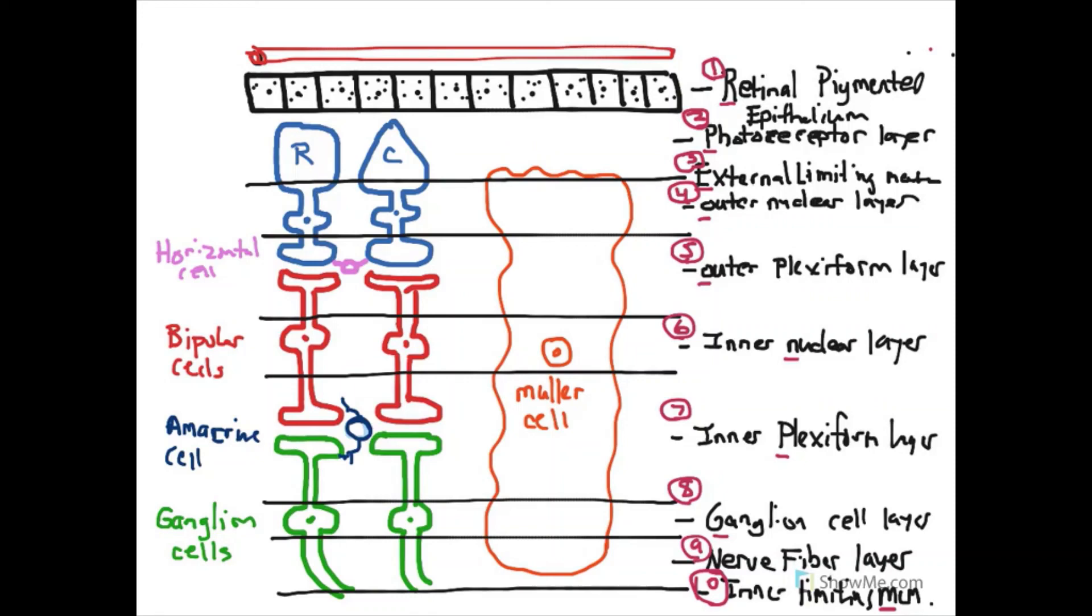So now rods and cones are sensitive to light. Please remember that rods are good in the dark. Rods are more, there's more of them, and they are more sensitive. Cones see color. They require a lot more light. They are less sensitive and they see color. They're red cones, green cones, and blue cones.